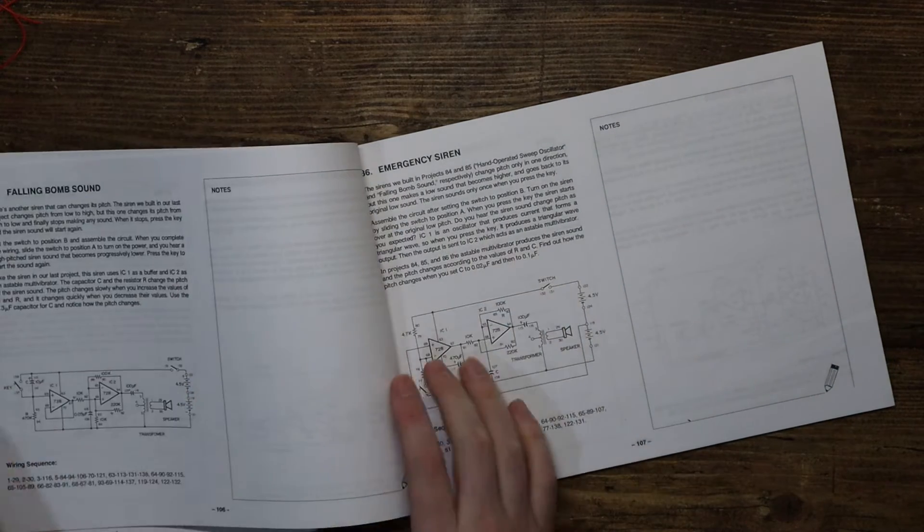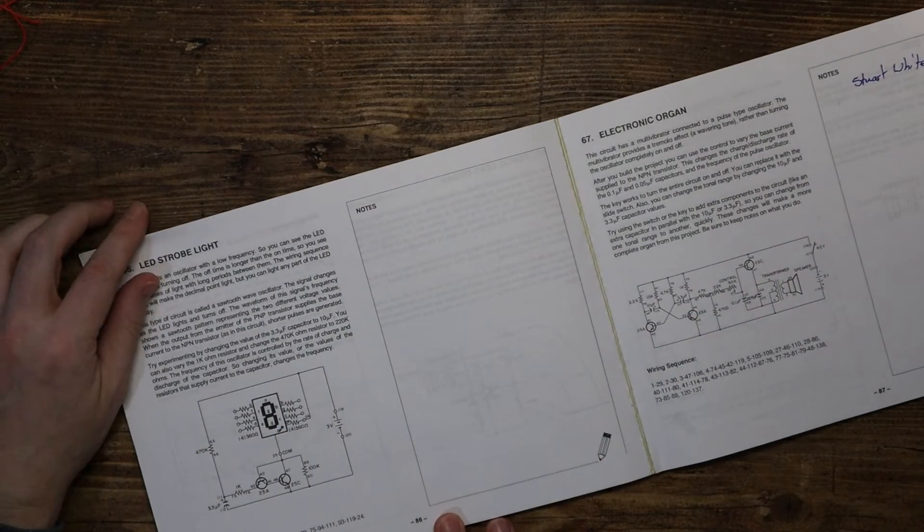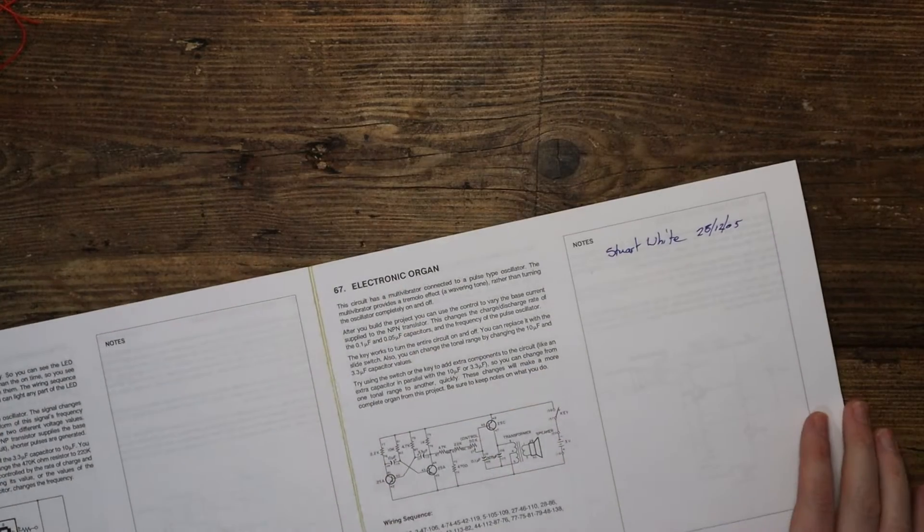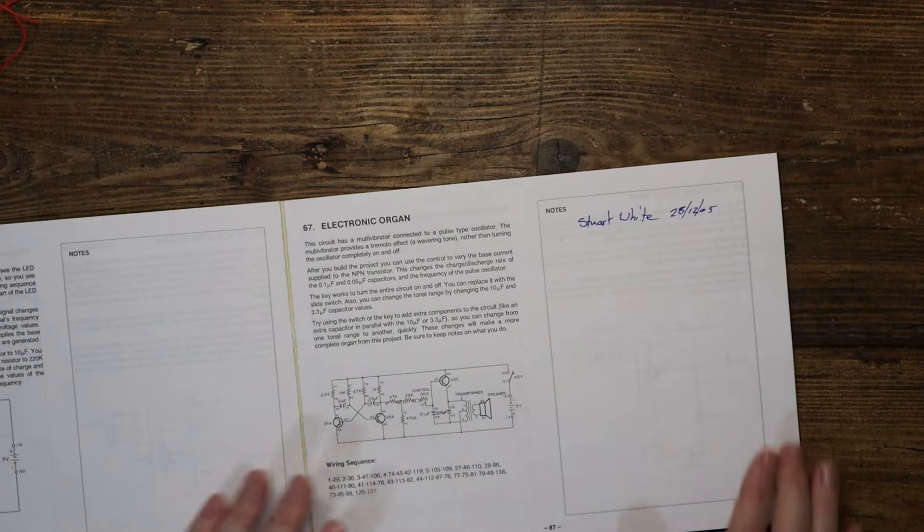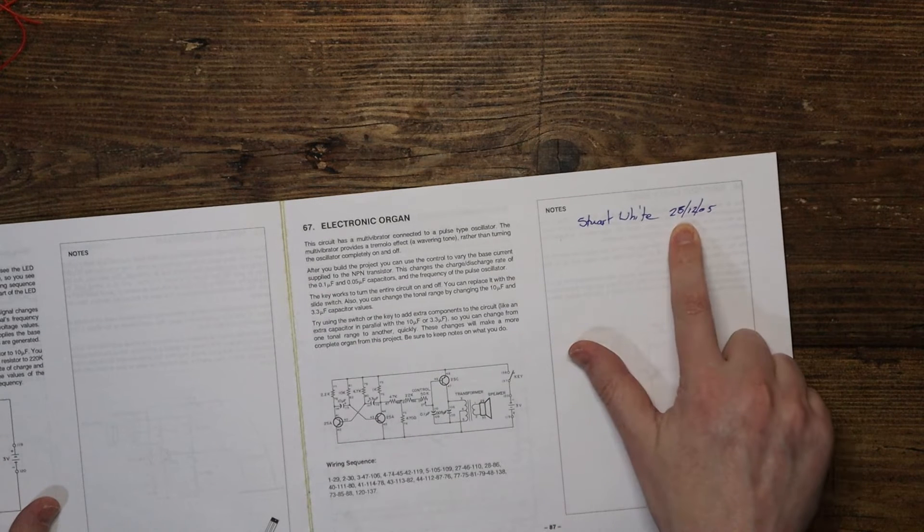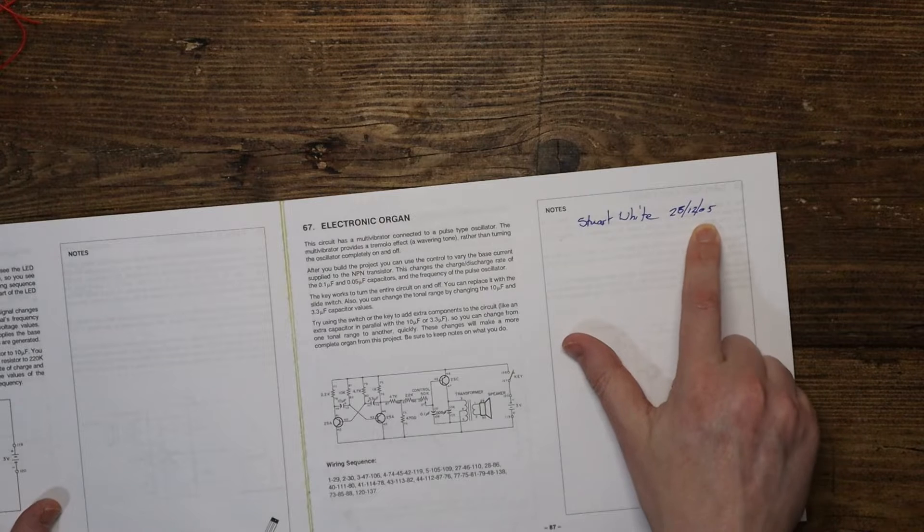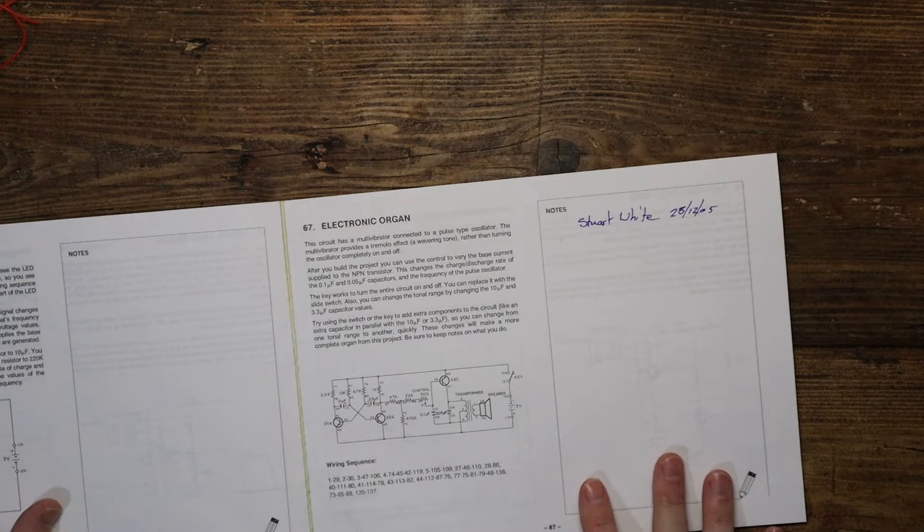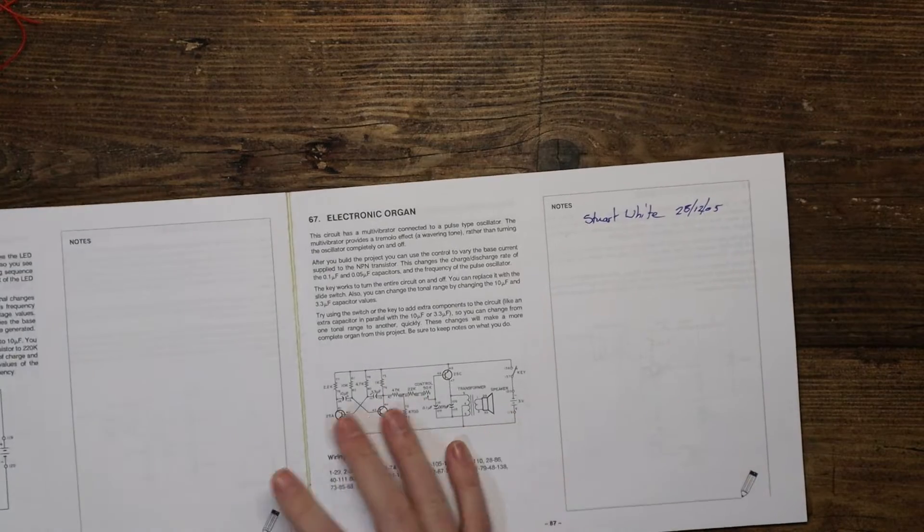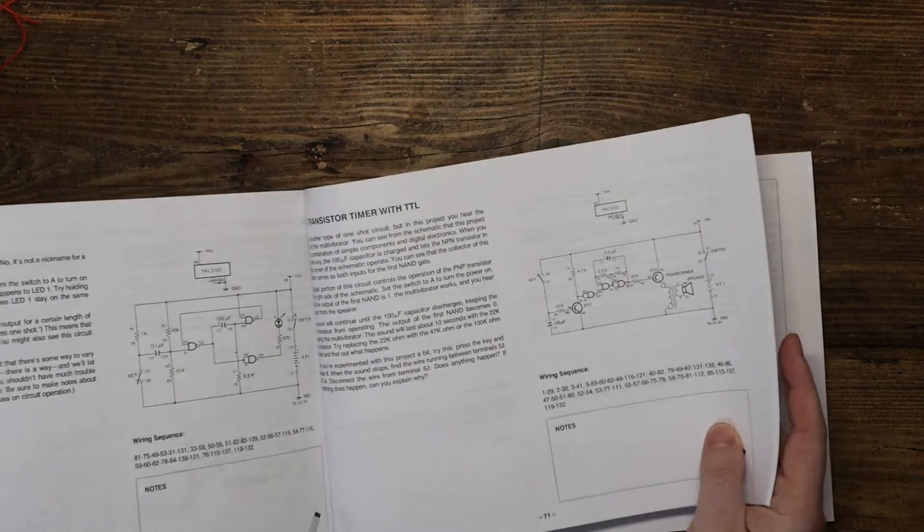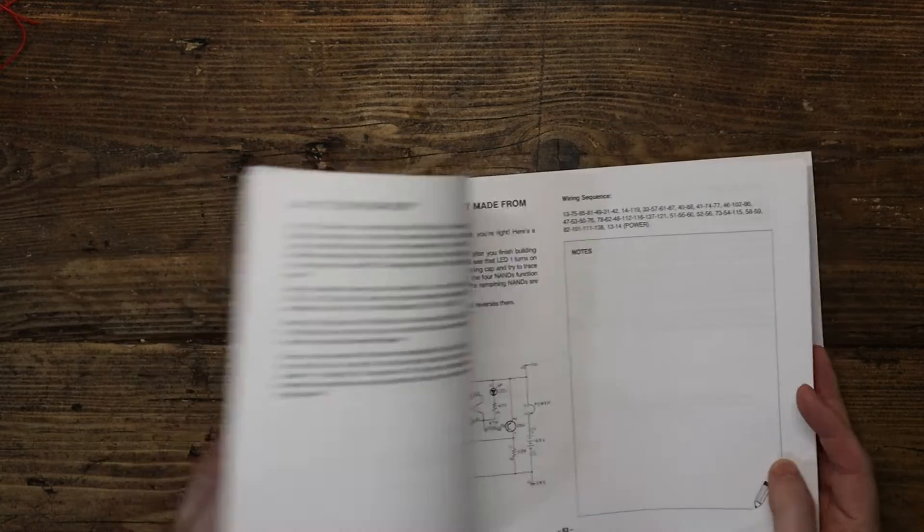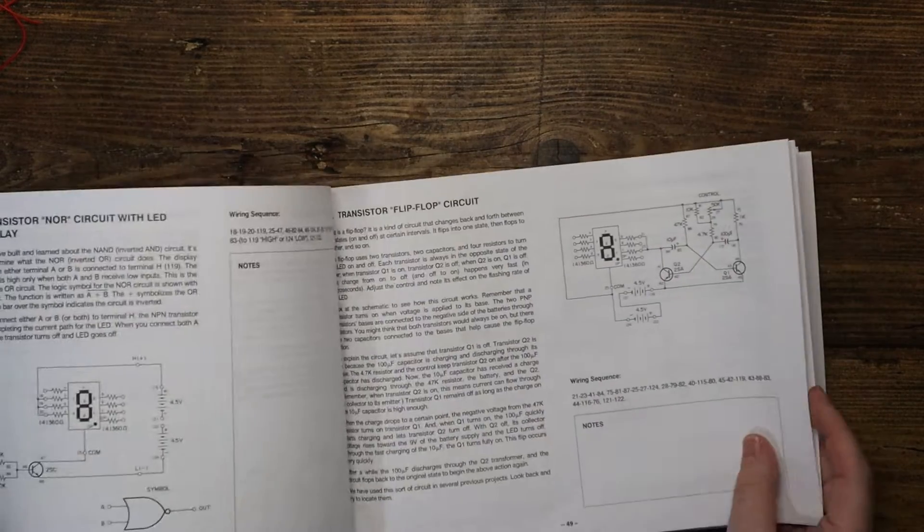That's pretty cool. But that is experiment 86. We've got an LED strobe light here and an electronic organ. And look, we've got some history from the previous owner, someone called Stuart White. 28th of the 12th, 2005. They've done the electronic organ one. That's pretty cool. So it must have been bought as a Christmas present if it's the 28th of the 12th. That particular person hasn't done too many in here, or at least they haven't recorded that they have.